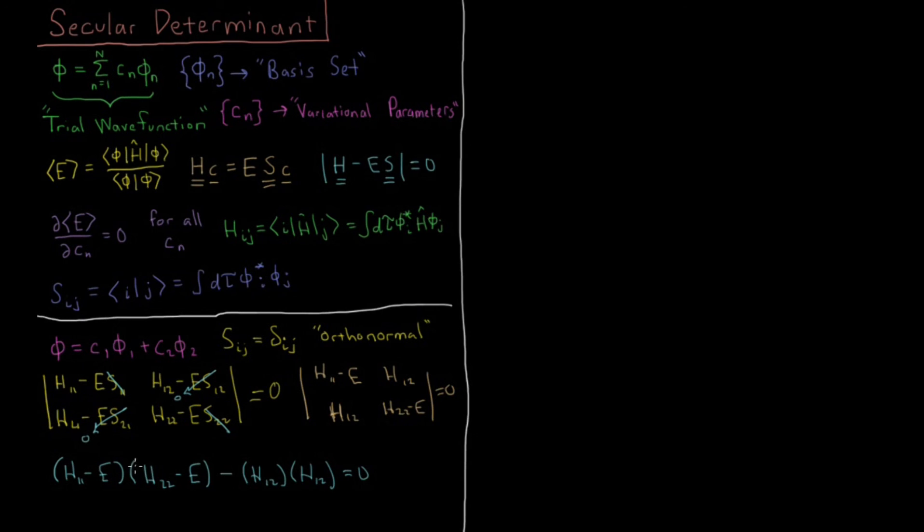So we can expand out those two polynomials there, and when we do that, you'll see that the final result we get from that is that E² plus (-H11 - H22) times E plus H11*H22 - H12² equals 0.